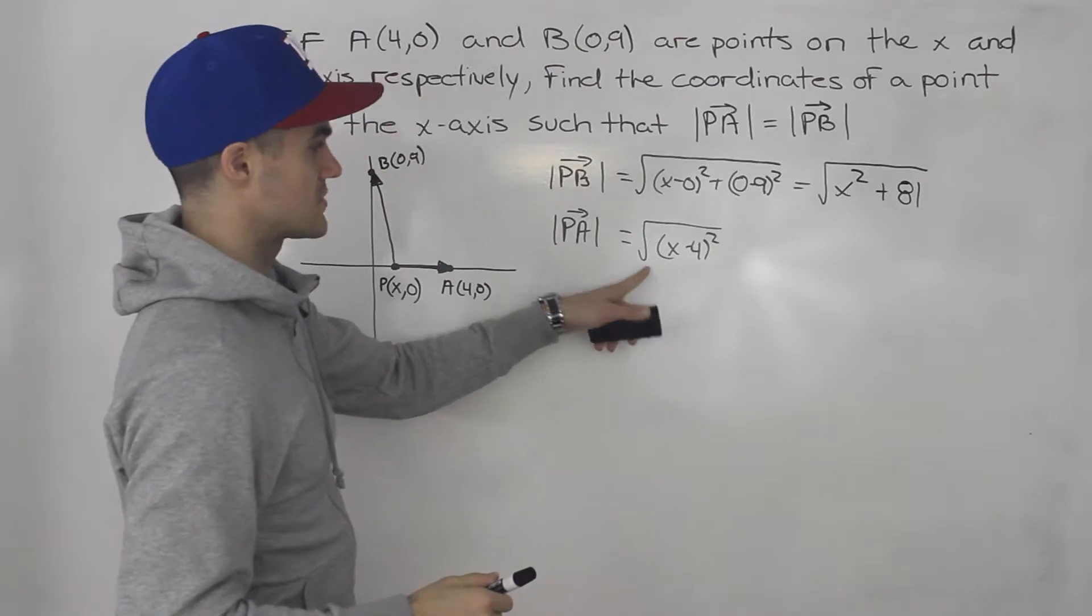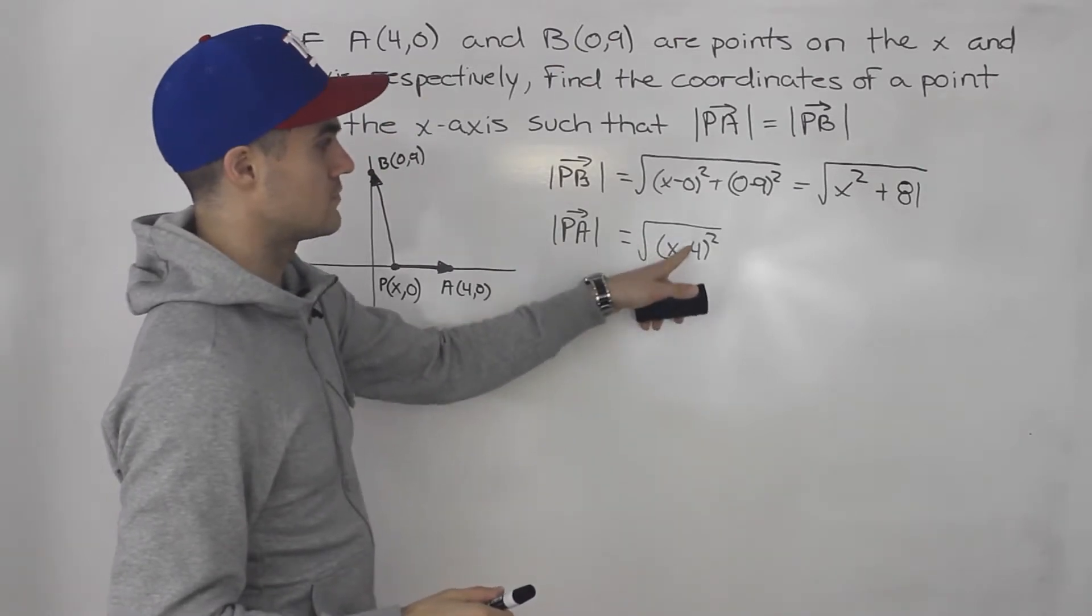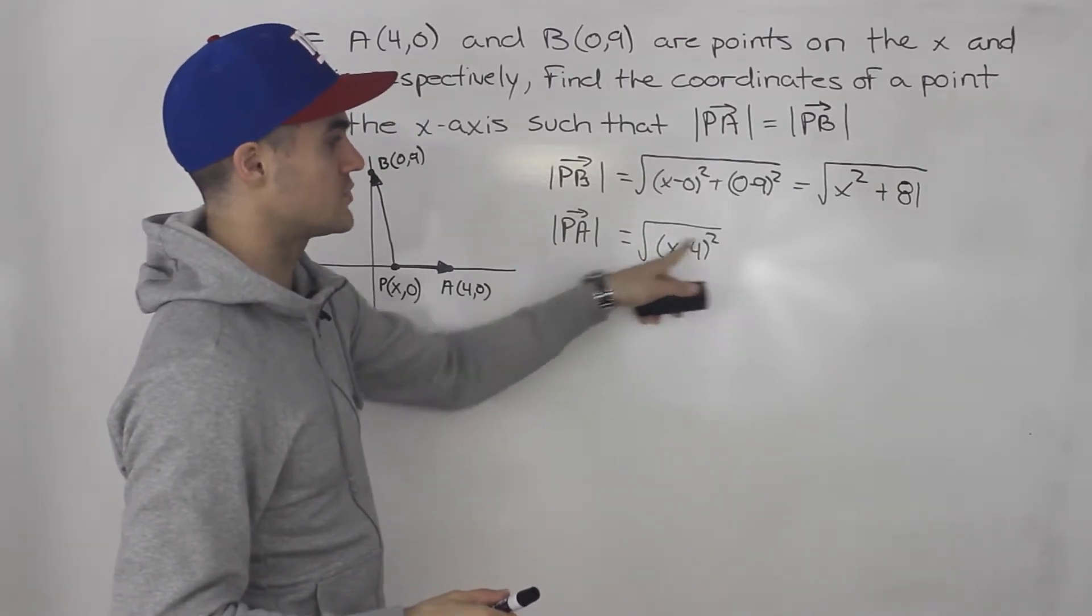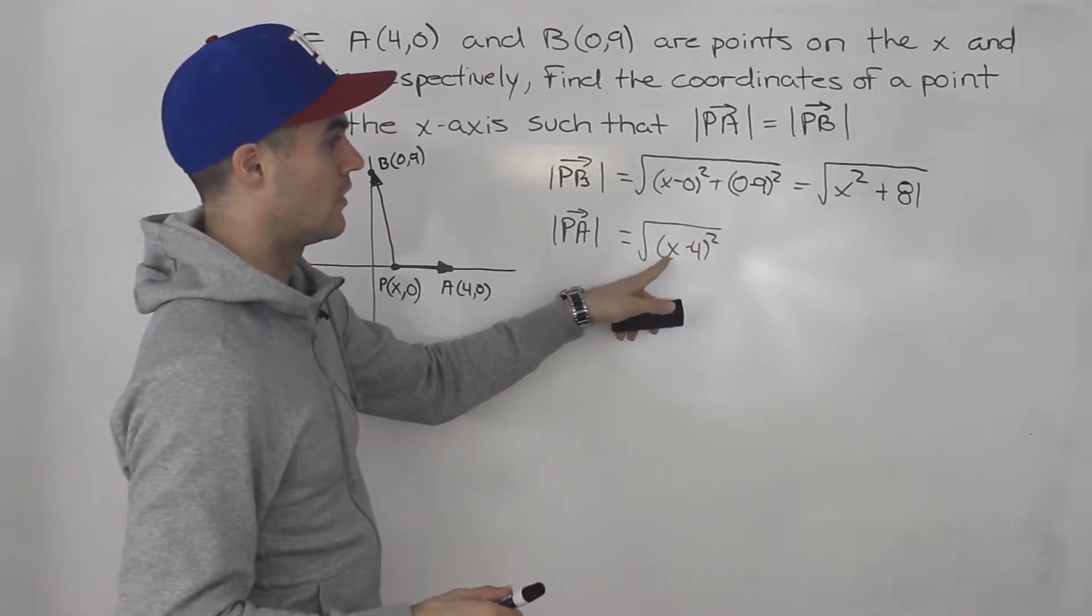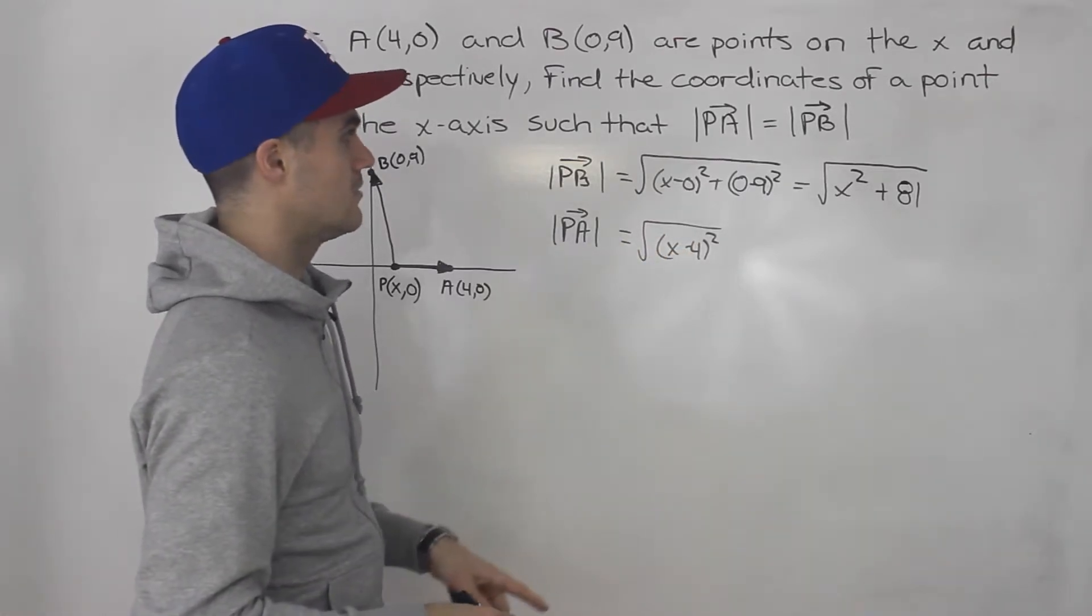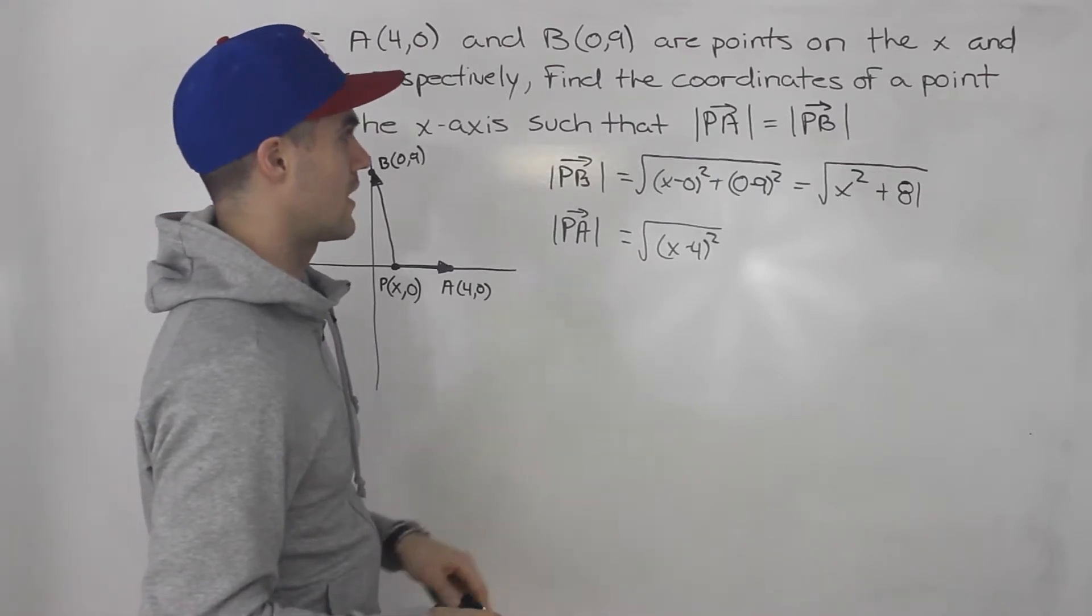And then for this one, let's just keep it like that for now. Technically it should just be (x - 4) because when you square something and then square root it, those exponents cancel out. But let's just keep that square root here for now.